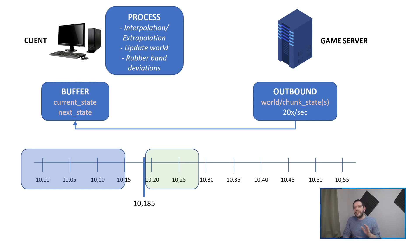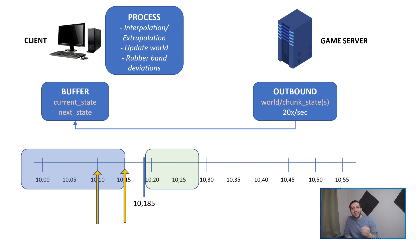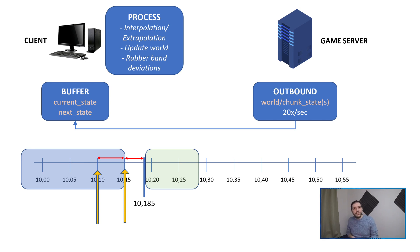With extrapolation we take the two latest world states, which of course are both going to be in the past. These two world states contain enough data for us to calculate both the rotation and speed of every single entity in those world states — NPCs, mobs, players, you name it. With that speed and rotation we can then compare the time between those two world states with the time between the render time and the latest world state, to do an estimated calculation of where all those entities are going to end up if they kept moving in the same direction.